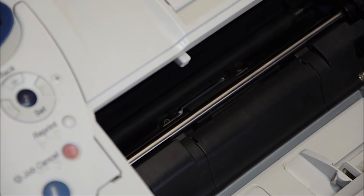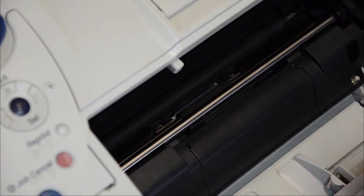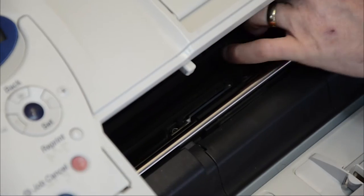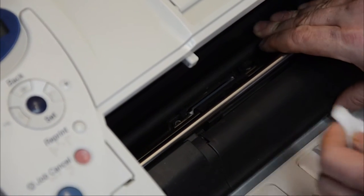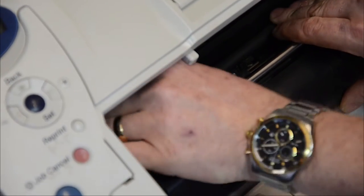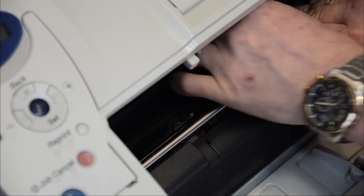To clean these rollers, using your alcohol wipe, wipe the roller from side to side, removing the dirt. Turn it slightly, continue wiping until you go all the way around.